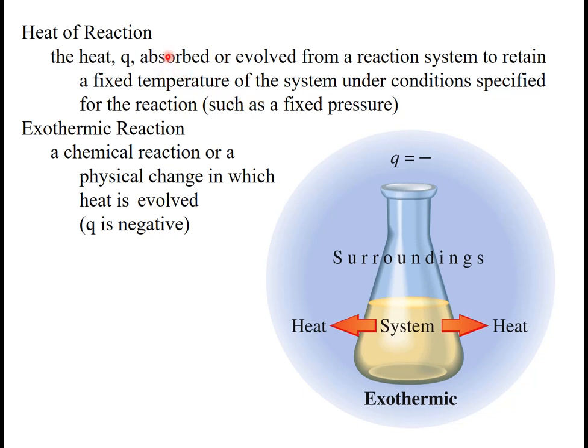So basically there's going to be two classifications, either the heat's being absorbed or being evolved. And the other thing to get out of this is that heat is symbolized by the variable of Q. So for an evolved reaction, it's classified as an exothermic reaction. So heat is evolved, and the sign for Q is negative. So the system is giving off heat to its surroundings.